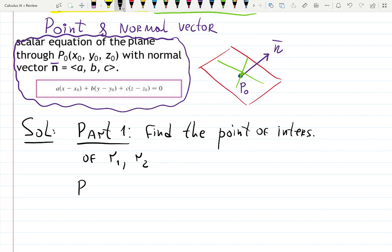And then part 2 is finding the normal vector n, which is coming from the cross product as you remember - cross product of r₁ and r₂. That's how we're going to do that.